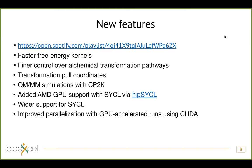We've also worked on improving control over free energy transformation pathways with a new implementation of soft-core interactions between particles when you appear, disappear, or change the Lennard-Jones parameters of particles. This should make those transformation simulations much more stable. When it comes to new features, we've implemented transformation pull coordinates — which I'll go into in more detail — as well as a new interface for running quantum mechanics/molecular mechanics hybrid simulations with the CP2K package.